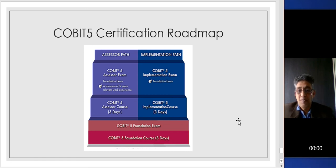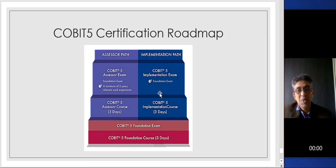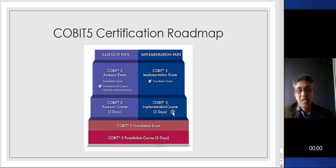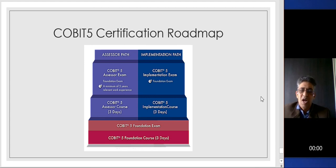The COBIT 5 certification roadmap: initially you start with the COBIT 5 foundation course, which can be three days, then you take the exam. You can take either the assessor path or the implementation path, each with a three-day program. On the assessor path, you take the assessor exam and become an assessor — essentially an auditor. On the implementation path, you take the implementation course, then the exam, and become a COBIT 5 implementation expert. I hope I have given you enough insight into COBIT 5. Next time I'll come up with a video for COBIT 2019 — the differences between COBIT 5 and COBIT 2019 and how to transition from COBIT 5 to COBIT 2019. Thank you.